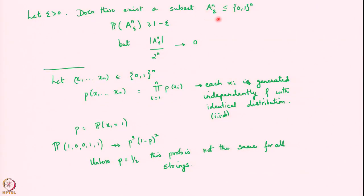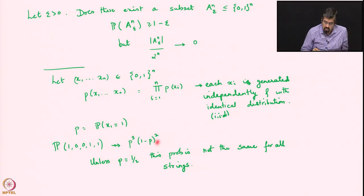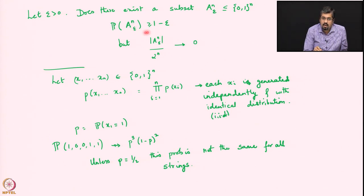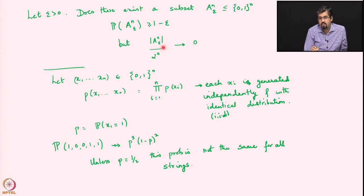We are looking for a subset A_n(ε) whose probability is large, but whose cardinality as a fraction of 2^n is small. To do that, we need to do some kind of prioritization so the right strings get into A_n(ε) — sufficiently many so that the probability is greater than 1-ε, but not too many, so that the fraction remains small.